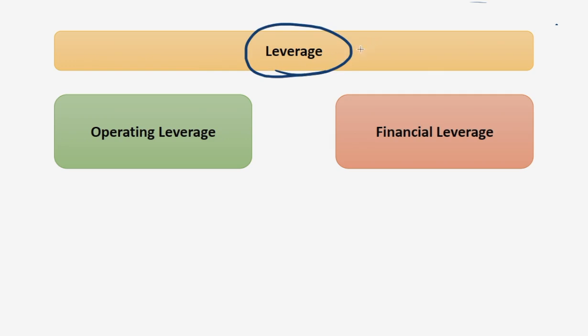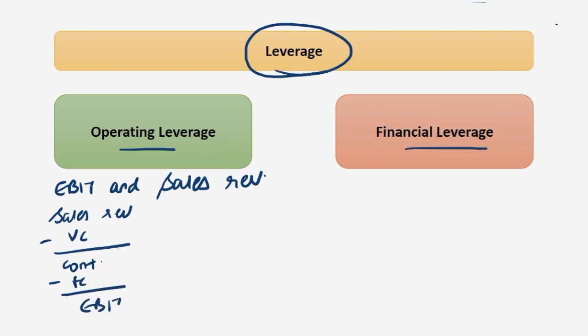What does leverage mean? Leverage means a relationship between any two variables. First kind is operating leverage and second is financial leverage. Operating leverage is a relationship between EBIT and sales revenue. See, there is sales revenue, from it you subtract your variable cost and you get the contribution. From it you subtract the fixed cost and you get EBIT. The formula for operating leverage is contribution upon EBIT.